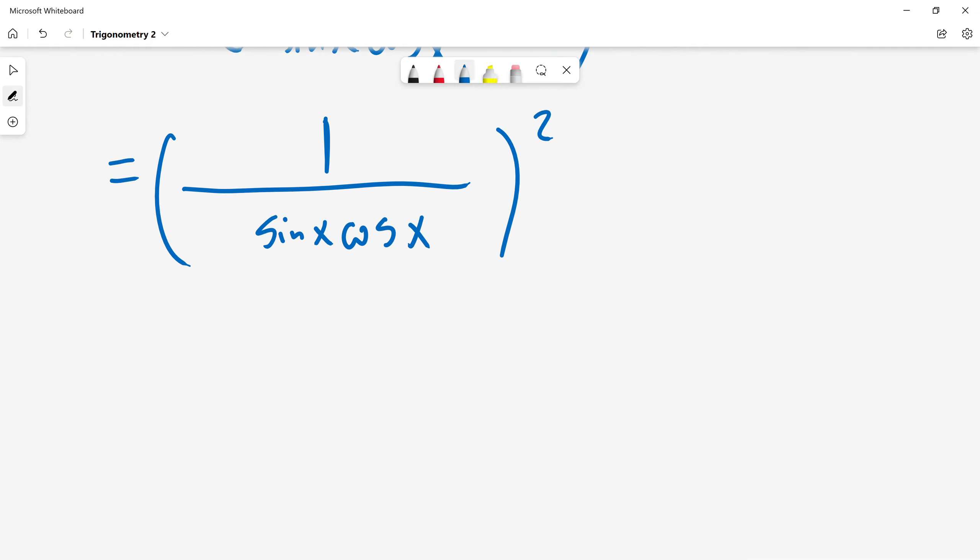Now I will multiply numerator and denominator by two. One times two will be two. And denominator will be two sin x cos x squared.